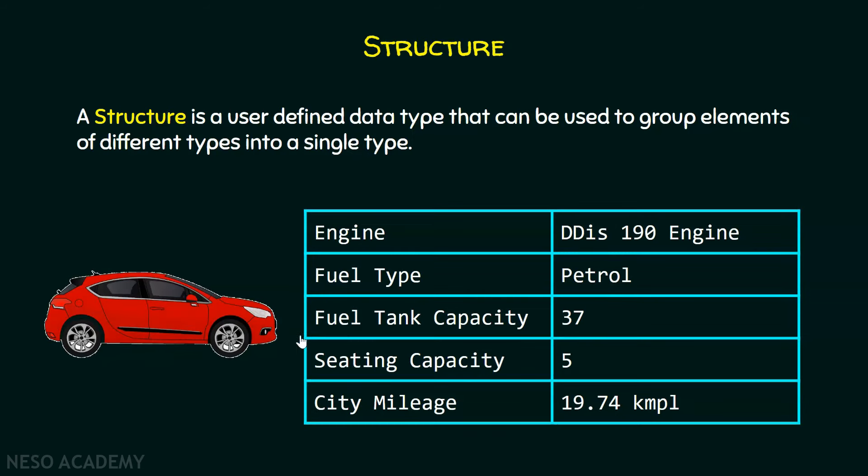If you remember in the previous lecture, this is our basic requirement. We want to store all this information somewhere. We want to store the engine specification, fuel type, fuel tank capacity, seating capacity, city mileage. Here I'm just giving one example.